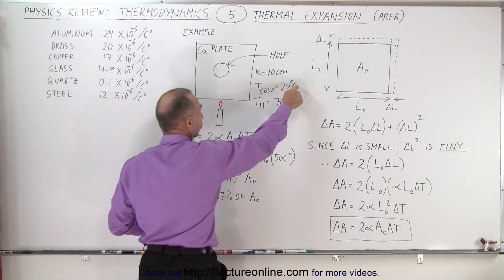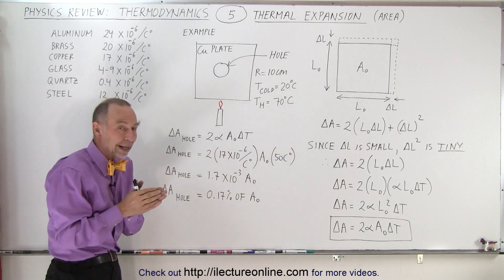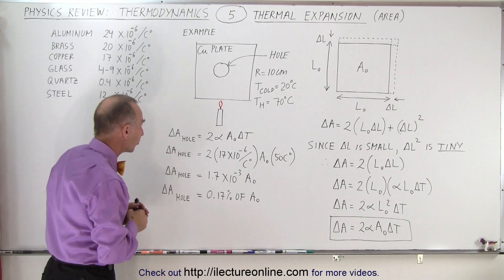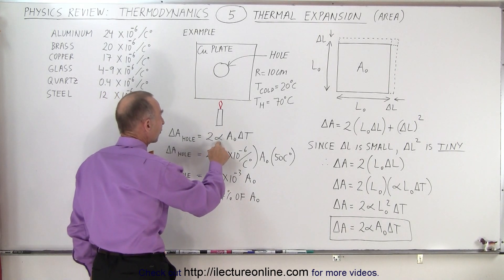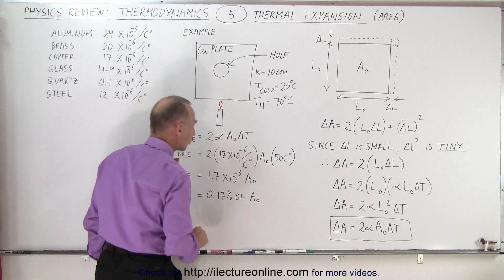Let's say the initial temperature is 20 degrees Celsius, the final temperature is 70 degrees Celsius, and we want to know by how much the hole changes in size. We use the equation: twice the coefficient of linear expansion times the original area times the change in temperature.